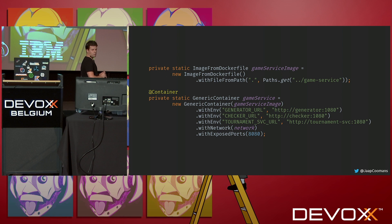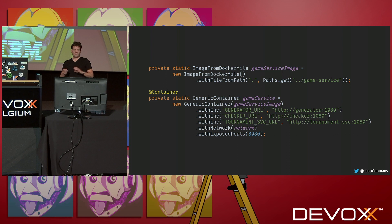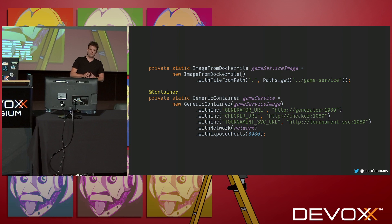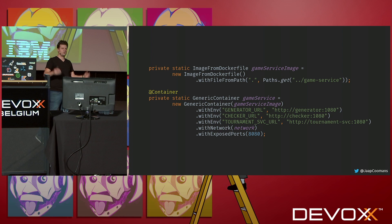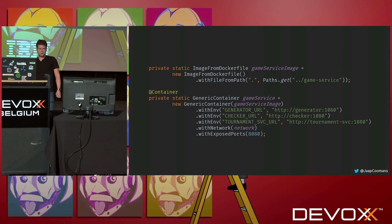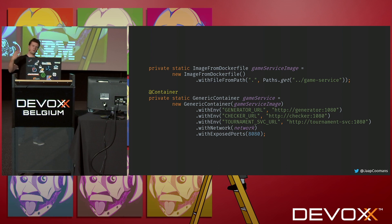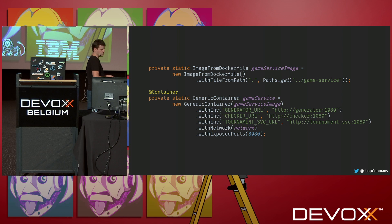Then I create my own service — I build it from my Dockerfile. TestContainers will run an instance of my game service and inject three environment variables: the URLs to the other services so it can find them. They all use the same port: 1080 is the default port of MockServer. Since I'm running everything on a local Docker network and they all have their aliases, that works out. Then I say: use my local network, but also expose port 8080 to my host, because my test is not running in the Docker network — it's running on the host, so it must be able to connect to my service.